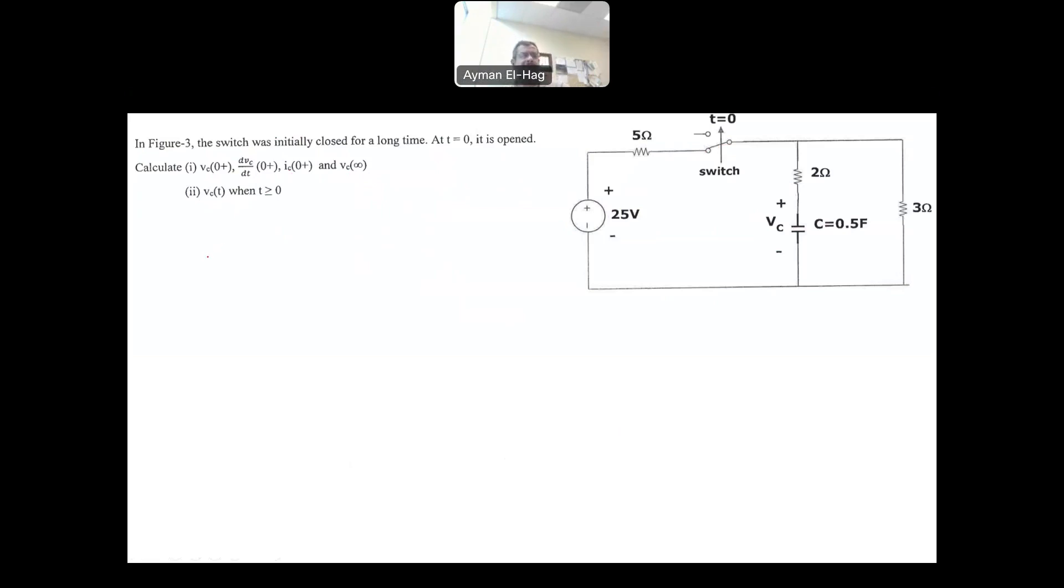So how to approach this question, we need to solve the question at three different times: at t less than zero, at t equal to zero, and at t goes to infinity. So let's start at t less than zero. At t less than zero, the switch was closed. We assume that the switch stays at that position for long enough until the capacitor will be fully charged. If the capacitor is fully charged, it will be converted into an open circuit.